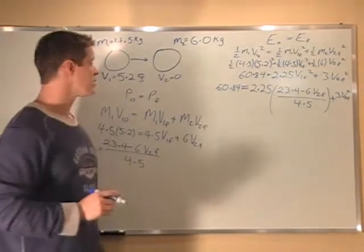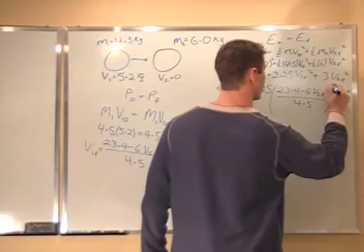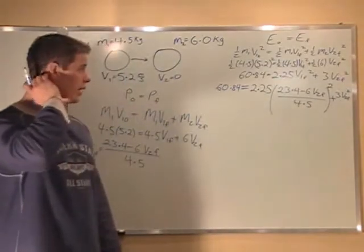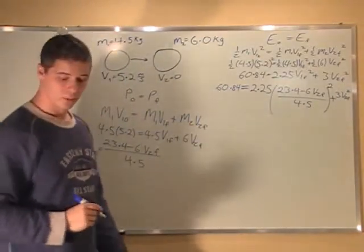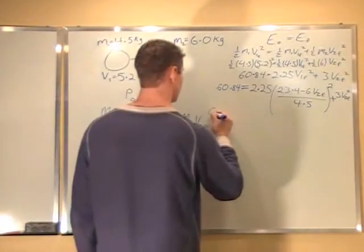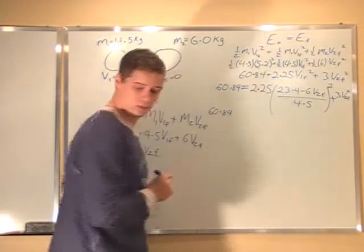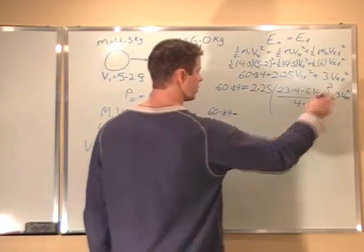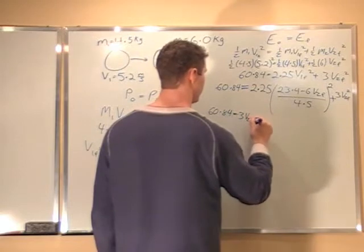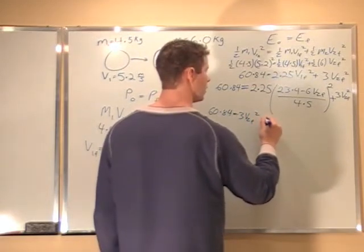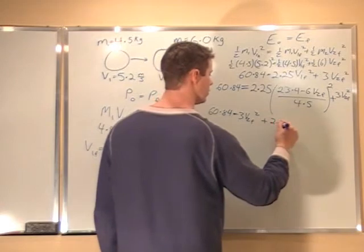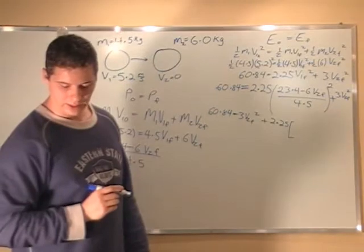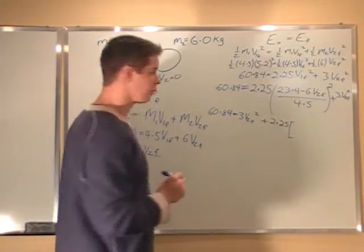Okay. So now I have to, this is squared, this whole thing is squared because this is all V1 F. I have to square that through now. So I have to do FOIL on that and that will give me some more numbers. 60.84 equals, I'm just going to move this 3 V2 F to the front, 3 V2 F squared plus 2.25. Now, if I square that through, I get 547.56.